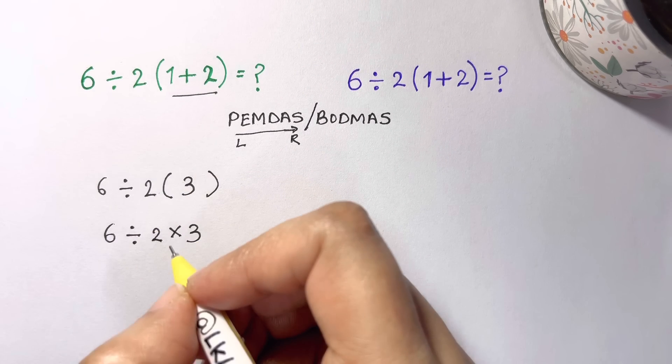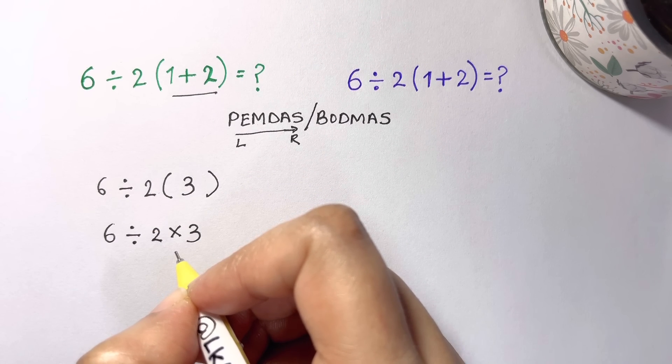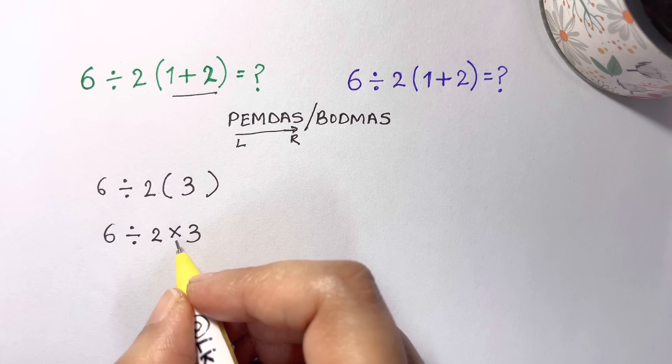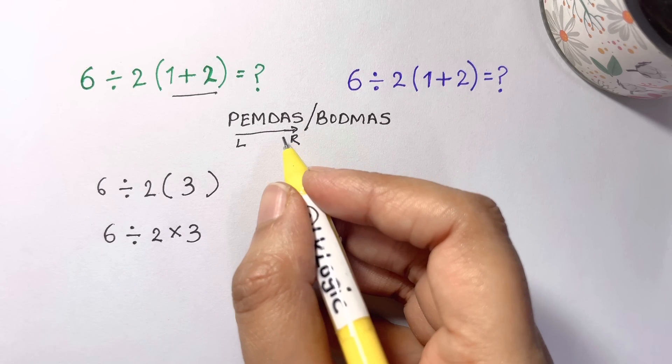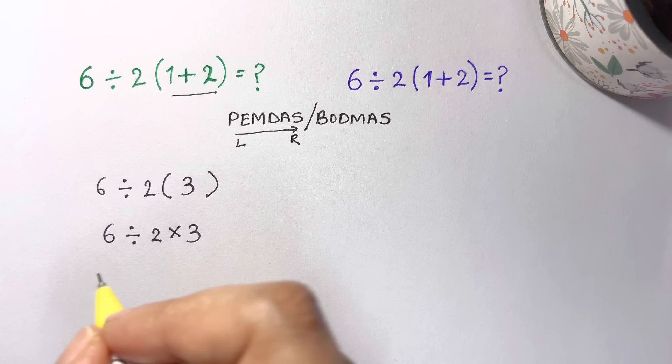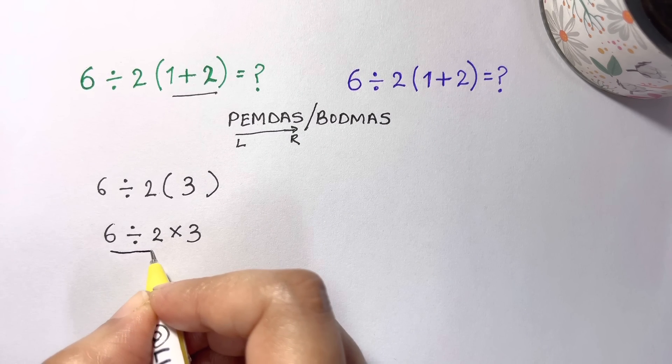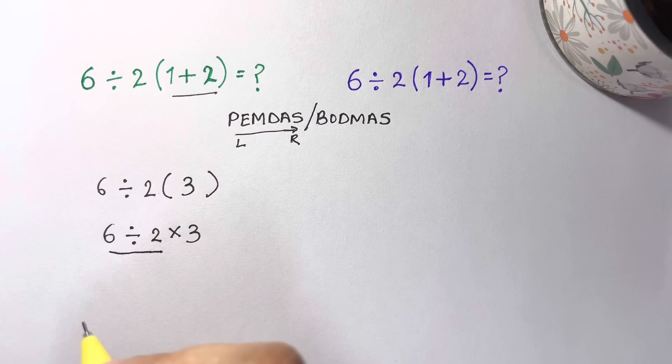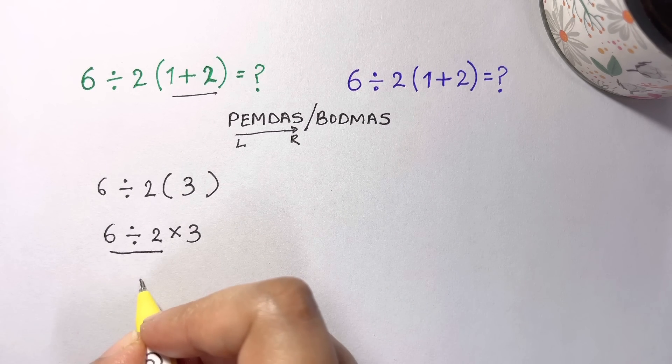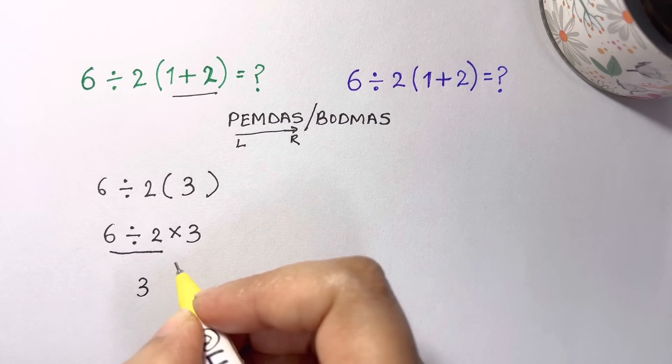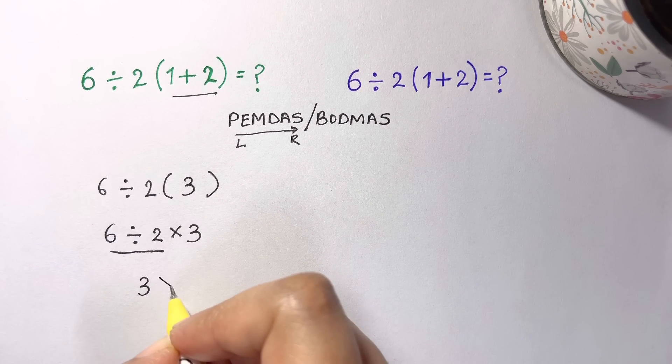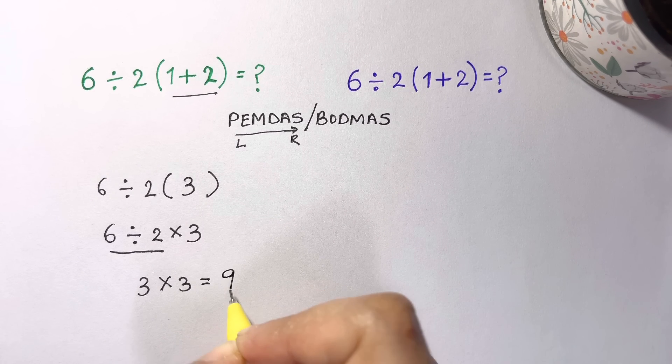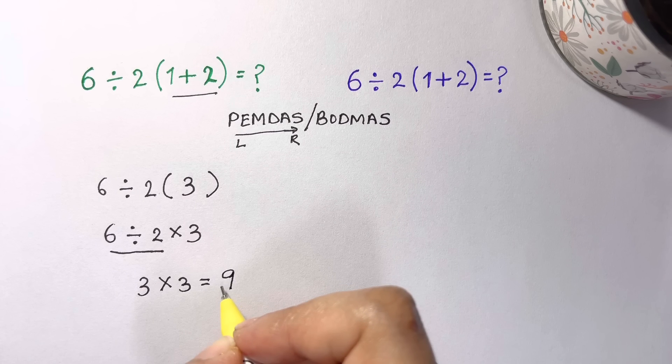The parenthesis is converted into multiplication. These are operators of equal precedence, division and multiplication, so we evaluate from left to right. When we evaluate from left to right, we have six divided by two. Starting on the left, we have six divided by two which is equal to three, and then we have three times three which is equal to nine.